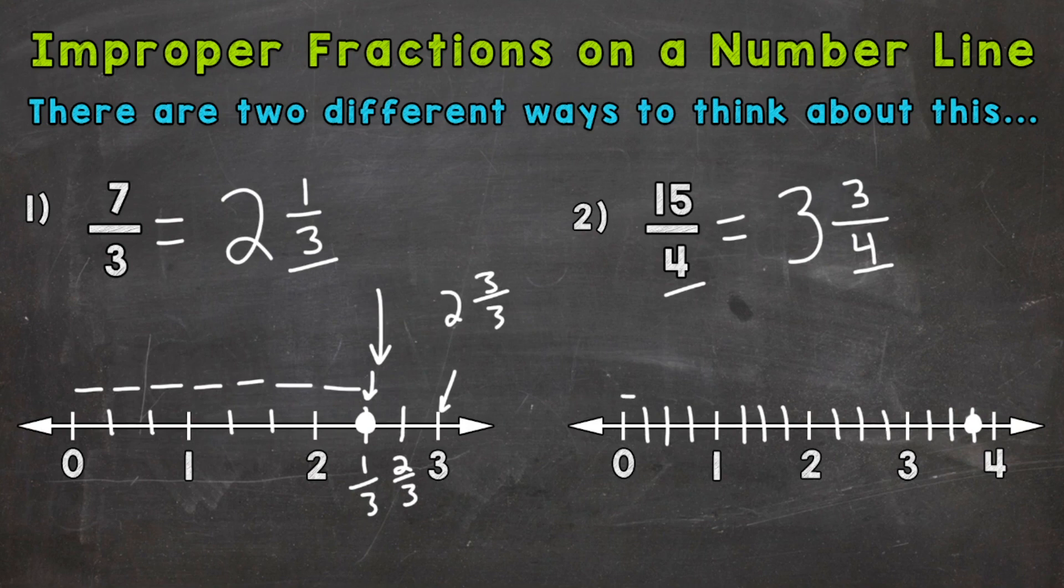So one fourth, two fourths, three fourths, four fourths, five, six, seven, eight, nine, ten, eleven, twelve, thirteen, fourteen, and fifteen fourths puts us at the same place. And again, that makes sense because that improper fraction, fifteen fourths, is equivalent to three and three fourths.